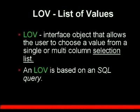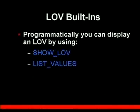An LOV is based on an SQL query. There are two types of built-ins for LOVs — different methods that you can programmatically use to display an LOV. If you have a button and you want that button to call the list, on the when-button-press trigger you could make use of one of these: show_lov and list_values.